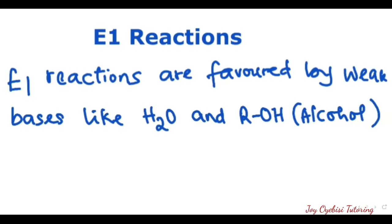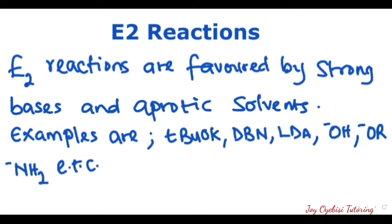In E1 reactions, two steps are involved and these reactions are favored by weak bases like water and alcohol. In E2 reactions, what you have is just a one-step reaction mechanism. These reactions are favored by strong bases and aprotic solvents. Examples include t-butoxide, DBN, LDA, OH⁻, OR⁻, and NH₂⁻, among others.